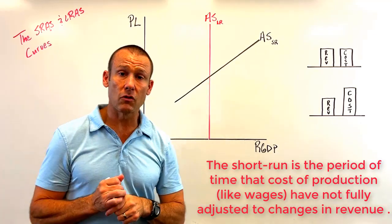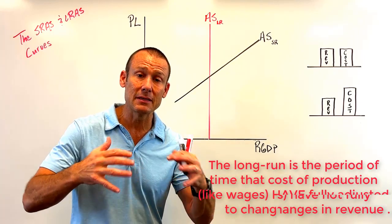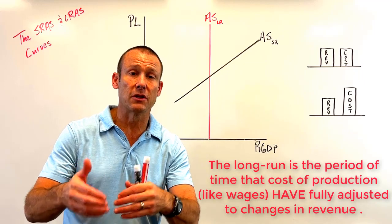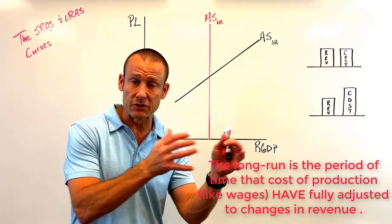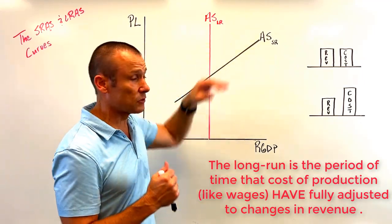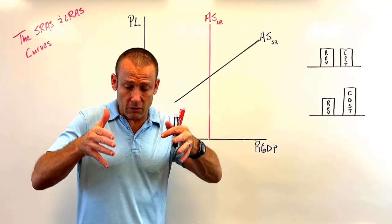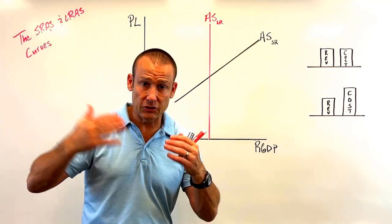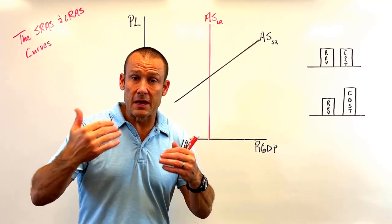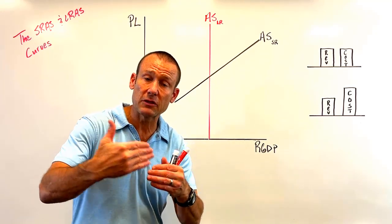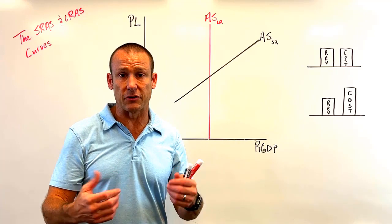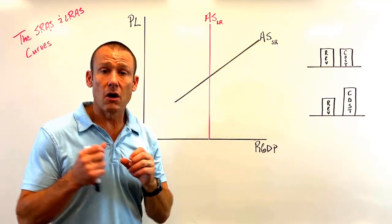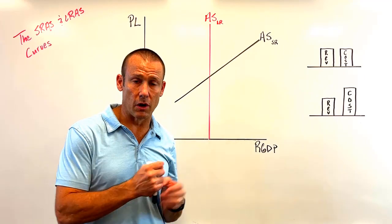The long run is the period of time in which cost of production have fully adjusted to changes in the price level — to changes in revenue. If our perspective is long run, we might get a price level change from a shock changing revenues of businesses, and then costs of production are going to eventually fully adjust to those changes. If they have fully adjusted, we are in the long run.